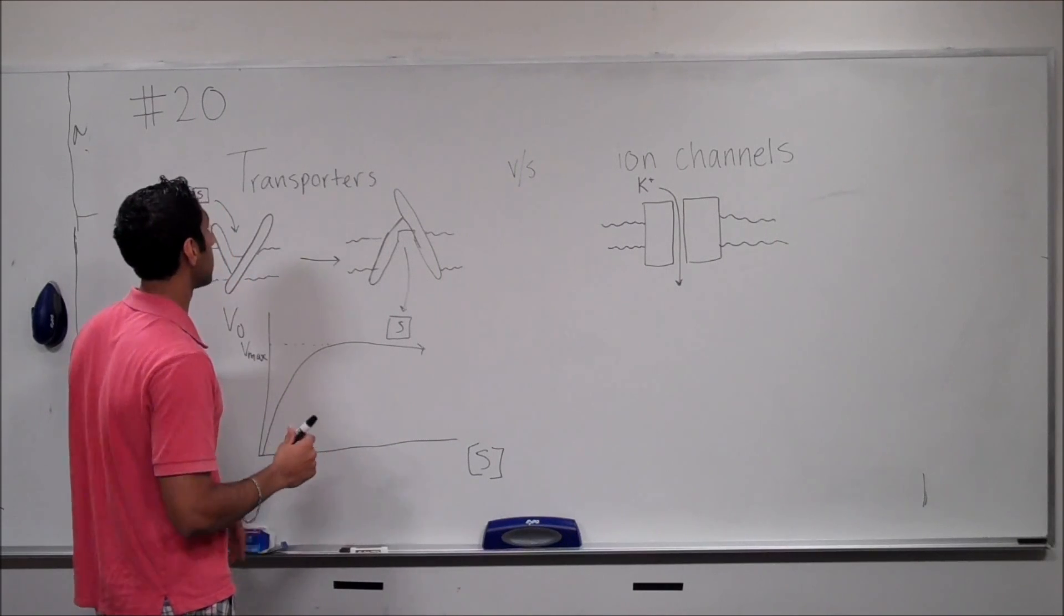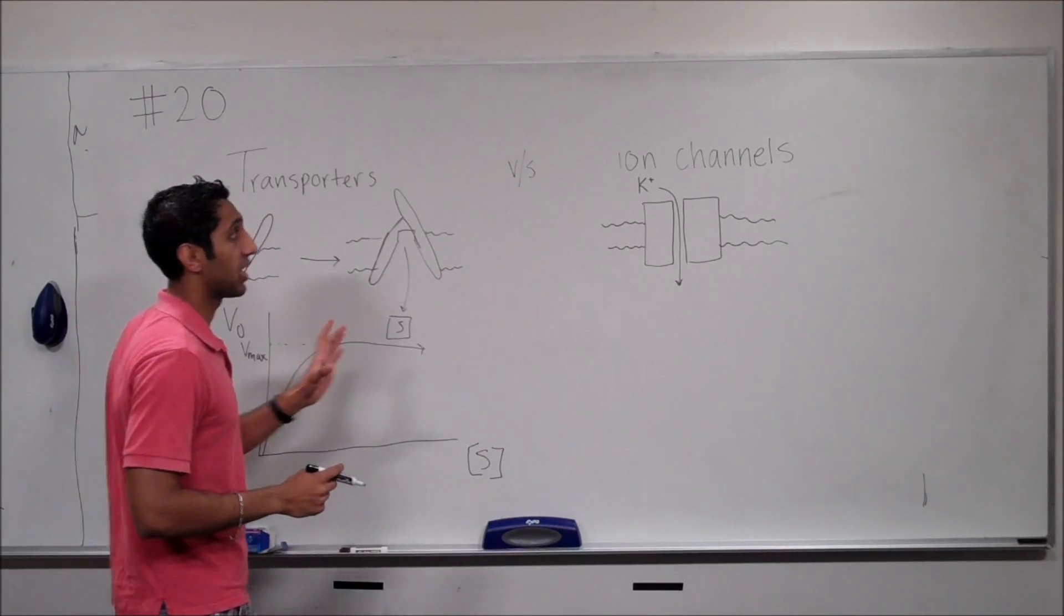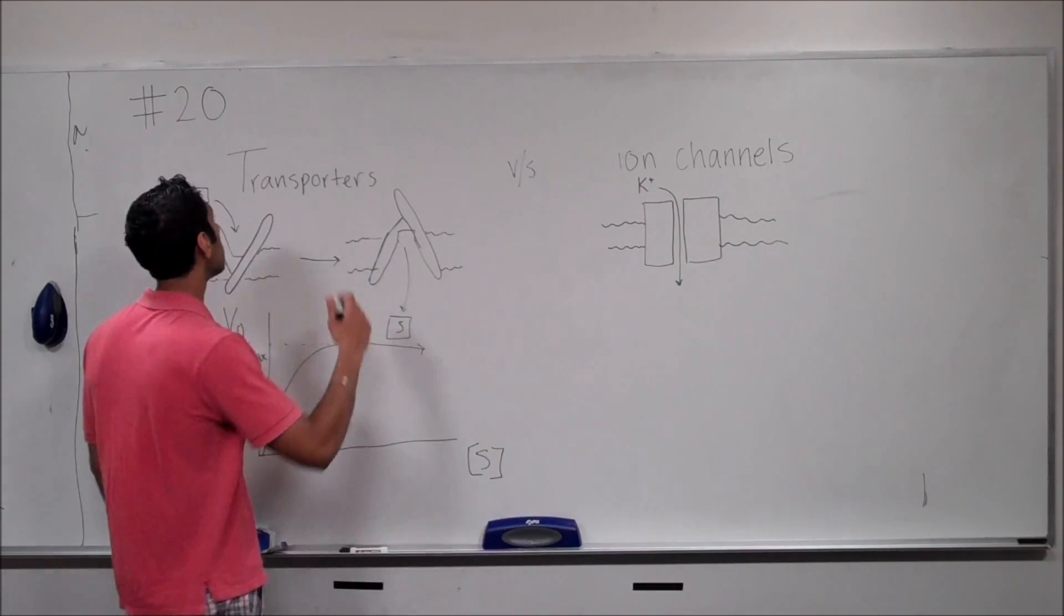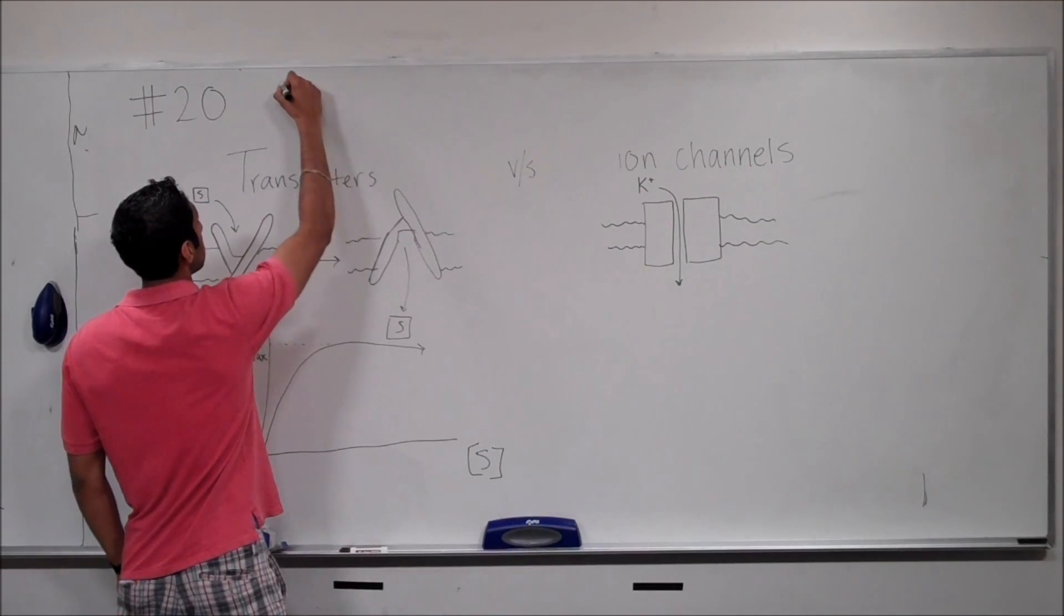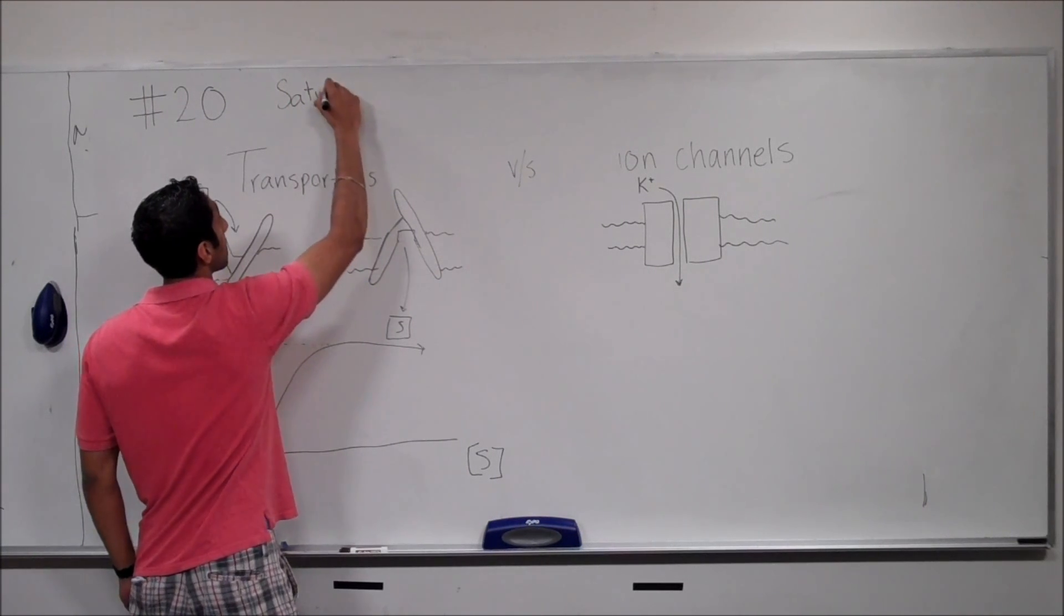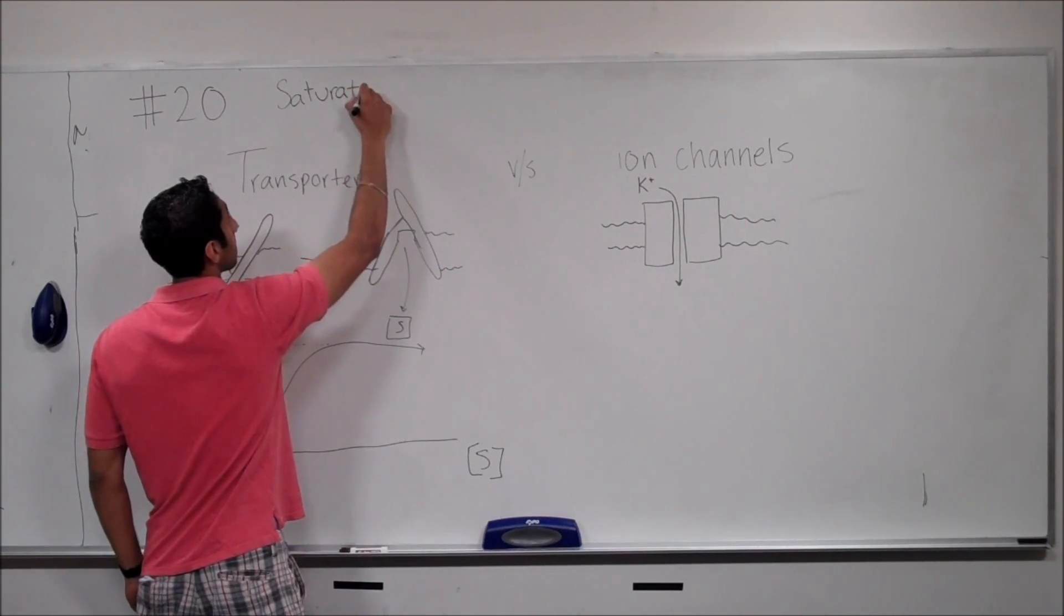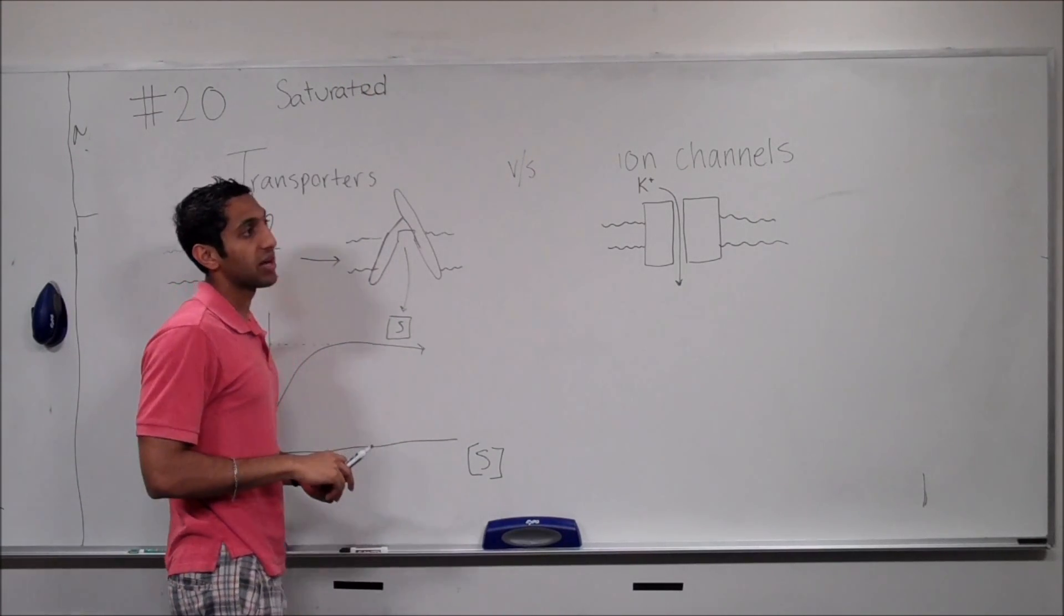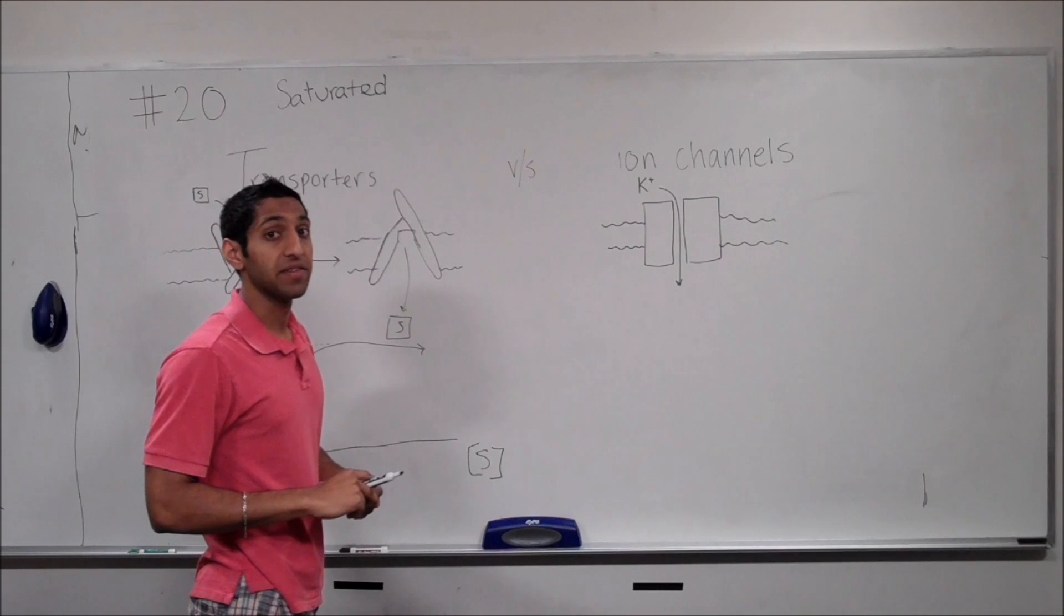And that's one of the major things that happens with transporters that ion channels, which I'll explain briefly, do not have a trouble with. And that is basically that they get saturated. And this stems from a variety of different things and cells can take advantage of these things.